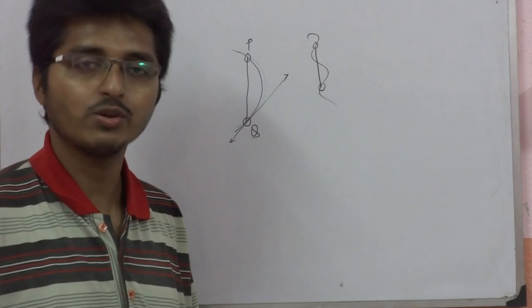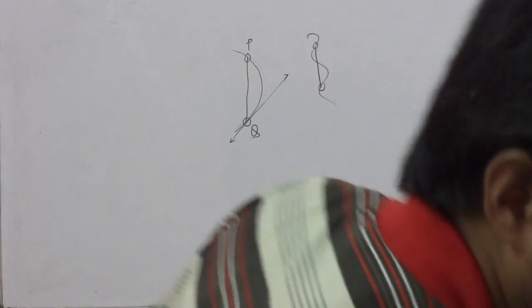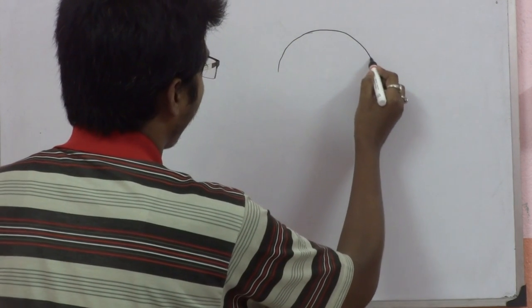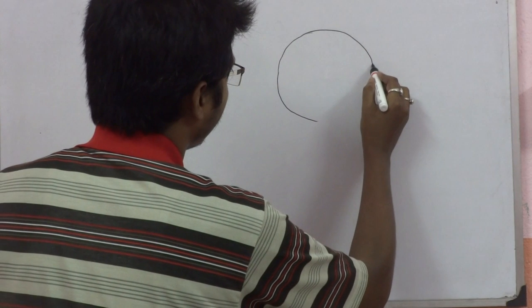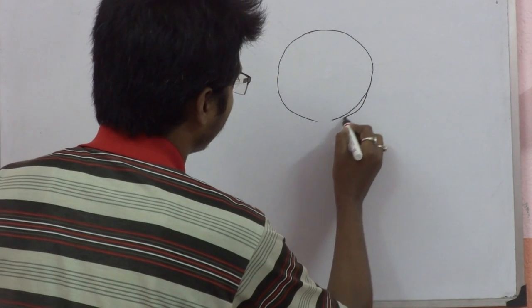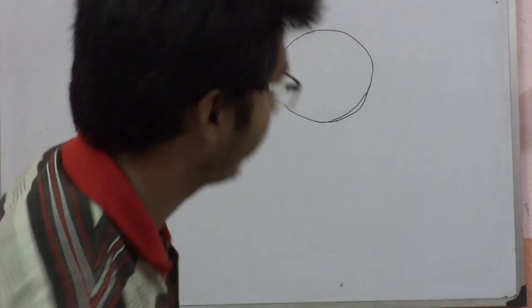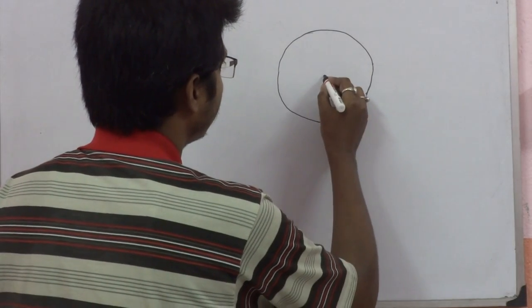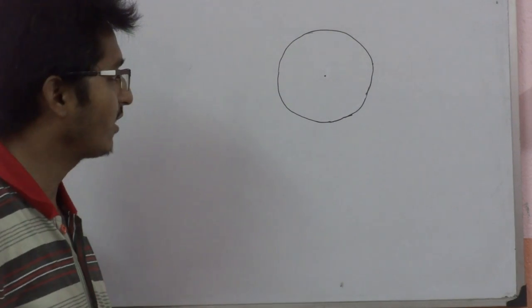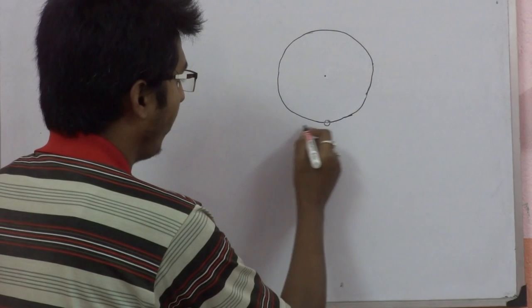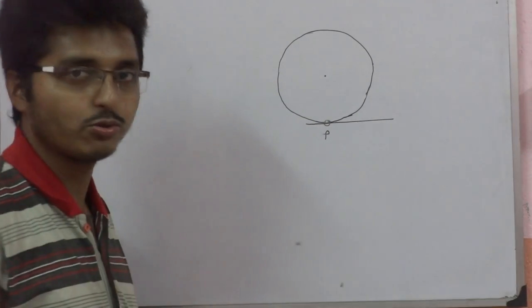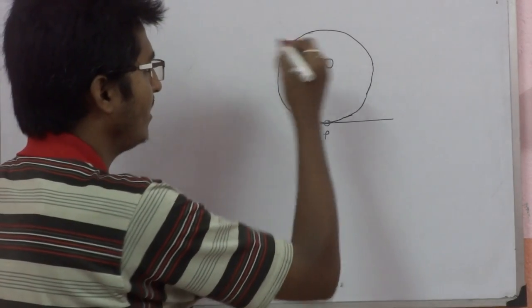So here we will discuss the properties of tangent to a circle. The theorem is, consider a circle. This is center. Consider this circle, this is center of the circle and suppose P is a point. Consider this tangent.